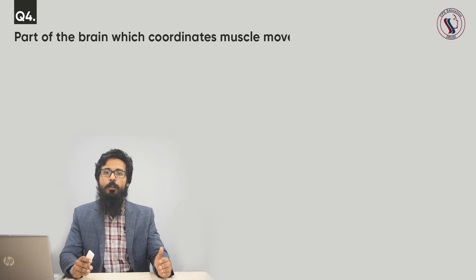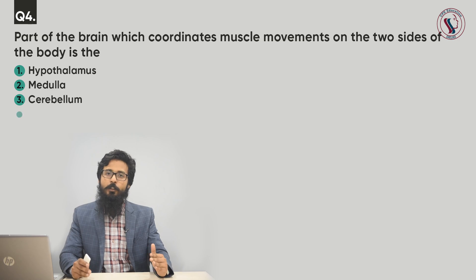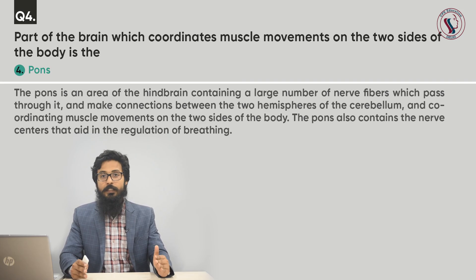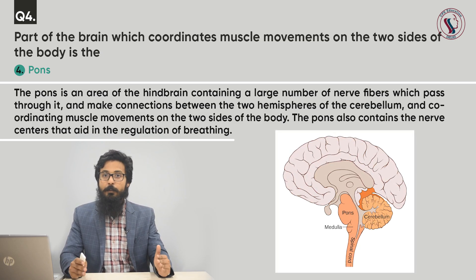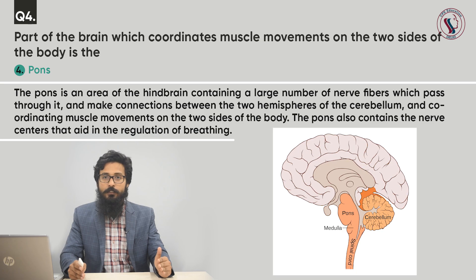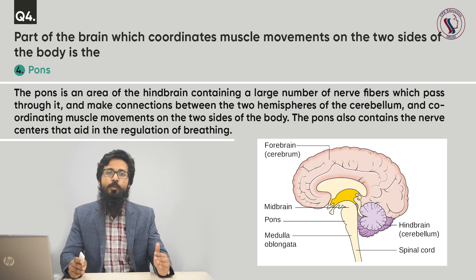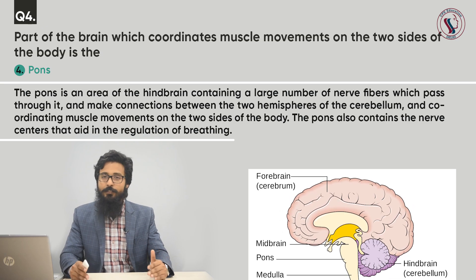Question number four. The part of the brain which coordinates muscle movement on the two sides of the body is: option one, hypothalamus; option two, medulla; option three, cerebellum; option four, pons. The correct answer is pons. The pons is an area of the hindbrain containing a large number of nerve fibers which pass through it and make connections between the two hemispheres, coordinating muscle movement on the two sides of the body. The pons also contains nerve centers that aid in regulation of breathing.